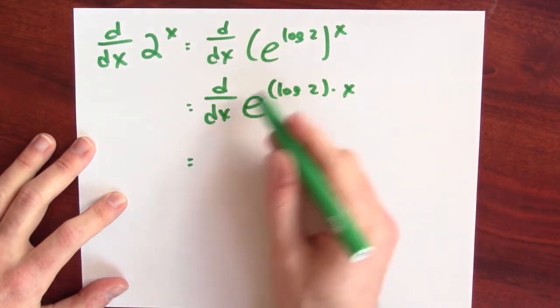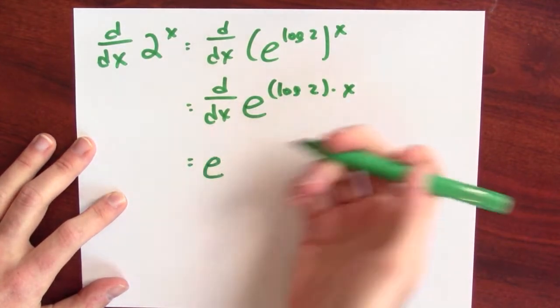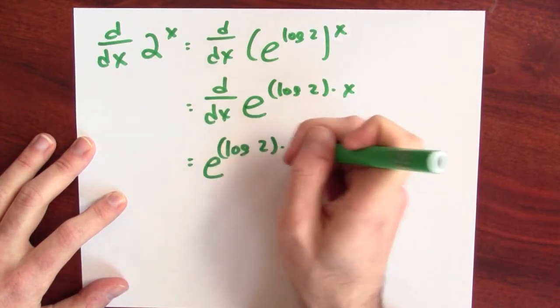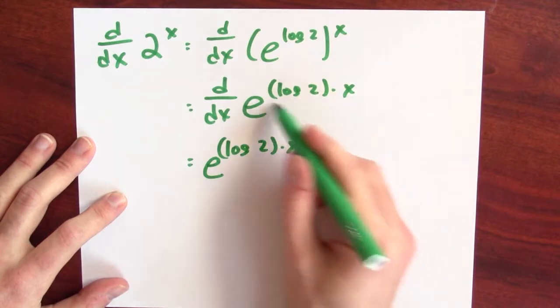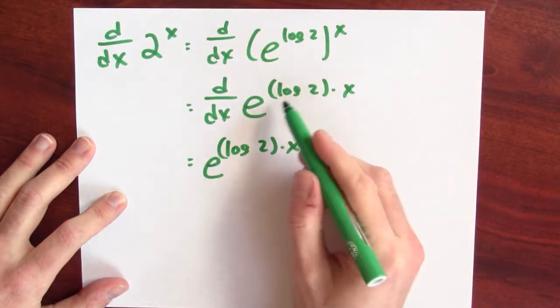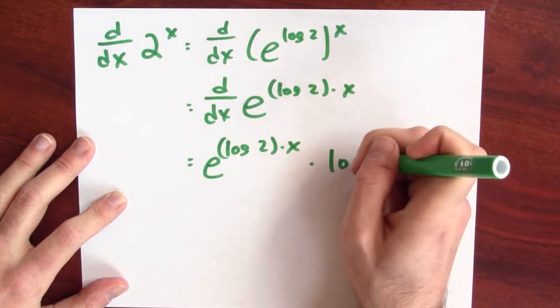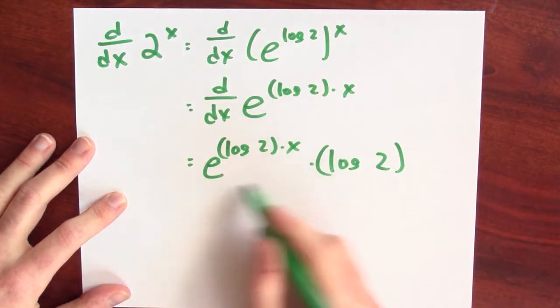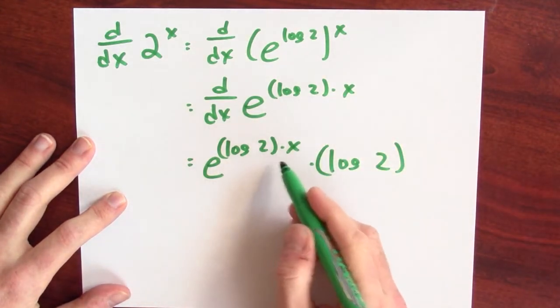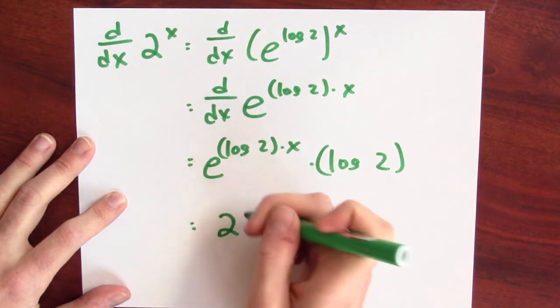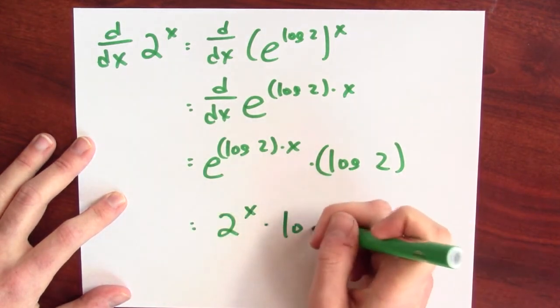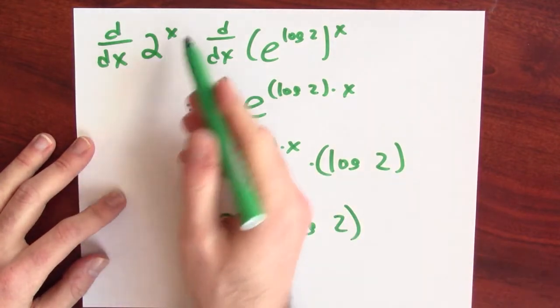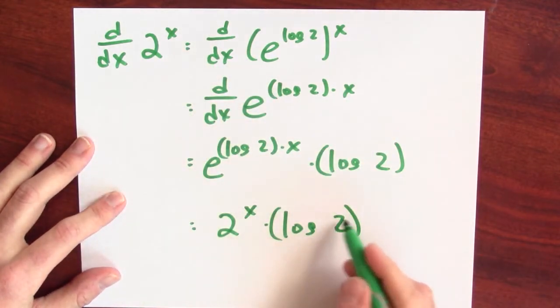So by the chain rule, it's the derivative of the outside function, which is itself e to the, at the inside function, which is log 2 times x, times the derivative of the inside function, which in this case is log 2 times x. So I'm just going to multiply by log 2. Now I could make this look a little bit nicer. e to the log 2 times x, well that's just 2 to the x times, again, log 2. So the derivative of 2 to the x is 2 to the x times log 2.